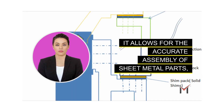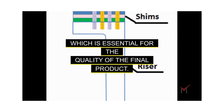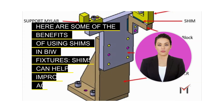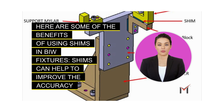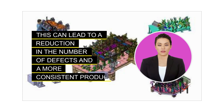Shimming is an important part of BIW fixture design. It allows for the accurate assembly of sheet metal parts, which is essential for the quality of the final product. Here are some of the benefits of using shims in BIW fixtures: shims can help to improve the accuracy of the assembly process by compensating for manufacturing tolerances, leading to a reduction in the number of defects and a more consistent product.